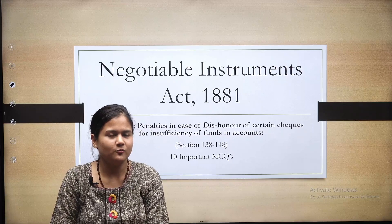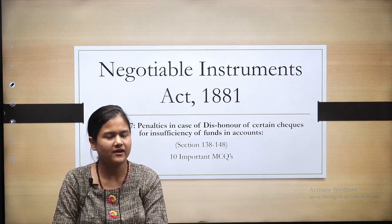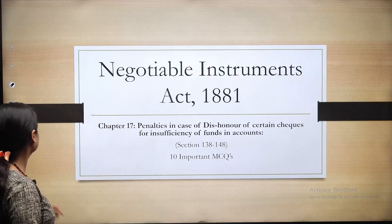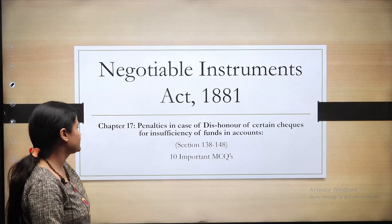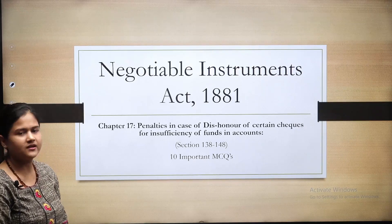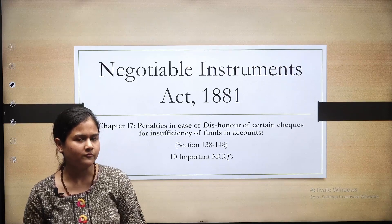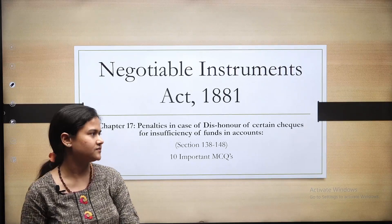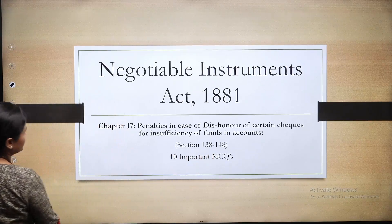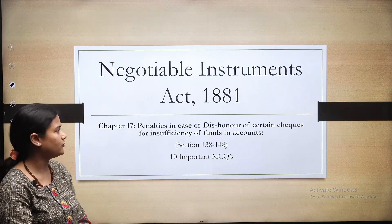A very good afternoon to all. Welcome to Paoja Law Academy. Today we are going to discuss 10 important MCQs in the Negotiable Instruments Act. Chapter 17 deals with the penalties in case of dishonor of certain checks for insufficiency of funds in accounts — that means cheque bounce cases. Sections 138 to 148 deal with these penalties.